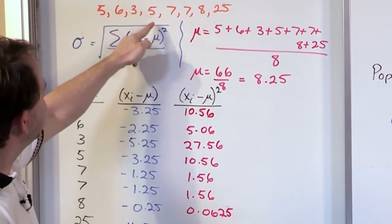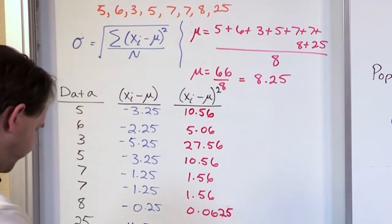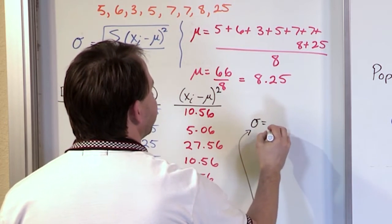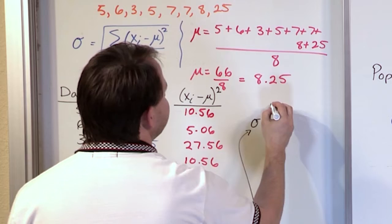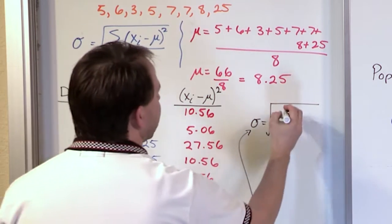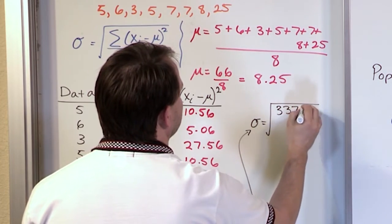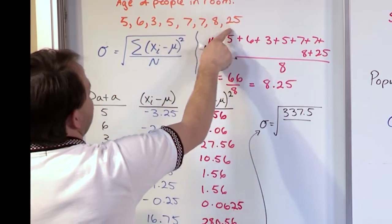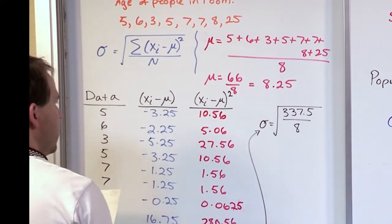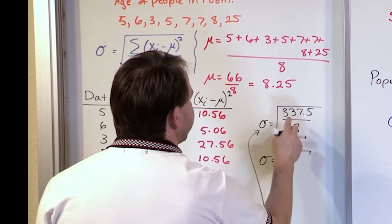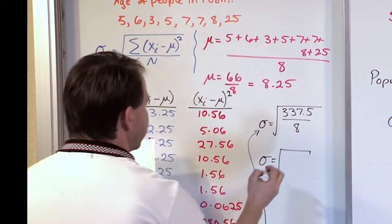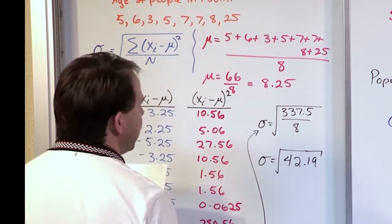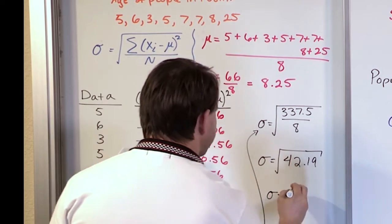Up to this point I've got everything in the numerator taken care of. The standard deviation is equal to the square root of 337.5 divided by 8 — since I have 8 data points. Under the square root, 337.5 divided by 8 gives 42.19. And so the standard deviation, once I take the square root, is 6.5.